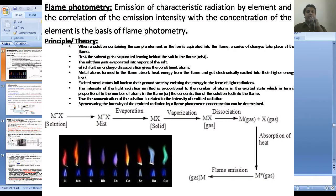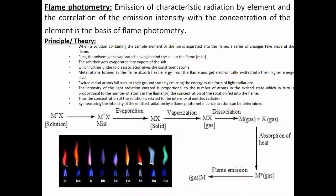Good morning students. In continuation of instrumental methods of analysis, today's discussion comes under optical measurements. Colorimetry is already covered; the second one is flame photometry. Flame photometry is defined as the emission of characteristic radiation by an element and the correlation of the emission intensity with the concentration of the element. This is the basis of flame photometry.